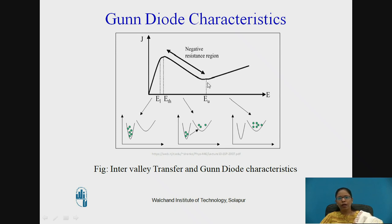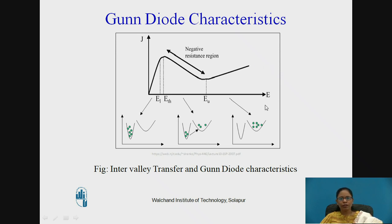After a certain point, when E is greater than EU, the current J will remain almost constant even if E or voltage is further increased.